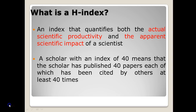Here comes the definition. H-Index is an index that quantifies both the actual scientific productivity and the apparent scientific impact. This index basically evaluates the researcher's actual innovations and his or her contribution in the research domain. For example, if any author has an H-Index of 40, it means that 40 of his published papers have each been cited by others at least 40 times. Or, if a researcher has 5 papers and each has been cited a minimum of 5 times, then that researcher has an H-Index of 5.